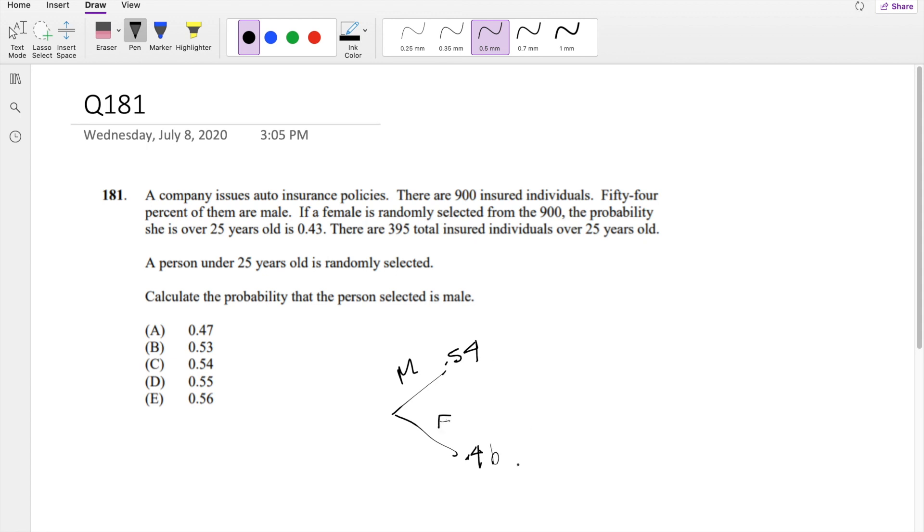If a female is randomly selected, the probability she's over 25, so over 25 like 25 plus, is 0.43. So that means less than 25 is going to be 0.57.